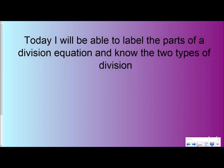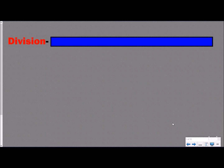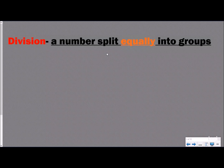Our objective for today: I will be able to label the parts of a division equation and know the two types of division. Division is a number split equally into groups. It could be any number — a small number, a big number, a fraction. It's a number split into equal groups, and that's very, very important, which is why it's red and bolded, that it is equally. That is what's happening when you're dividing.